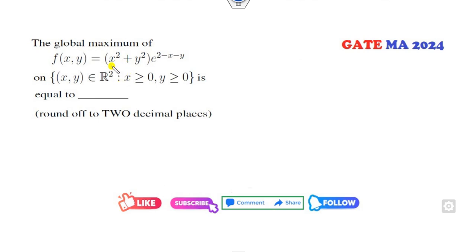First of all, what is the tip for you? You can see this function is symmetric. Why? Because f(x, y) is same as f(y, x), or whenever you replace x with y and y with x, the function remains the same.